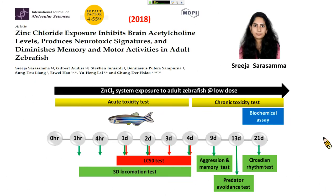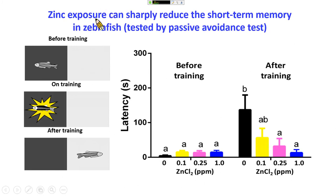Finally, I would like to show you the memory testing. We used this memory testing to study zinc chloride, done by my student Shreeja in 2018. This was actually an accidental finding — she was using zinc chloride to induce memory deficiency and found that zinc chloride can induce a very sharp decline in short-term memory, which was unexpected. We used passive avoidance — a shuttle box with a light area and a dark area. Once you open the gate, the fish quickly swim into the dark area because they prefer to stay in the dark, feeling more relaxed.